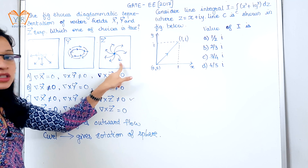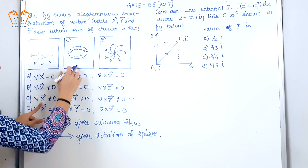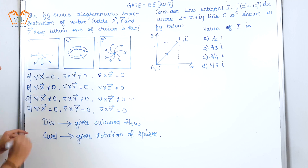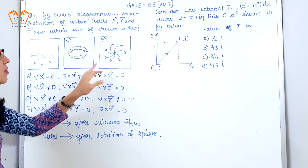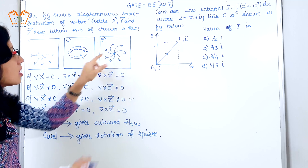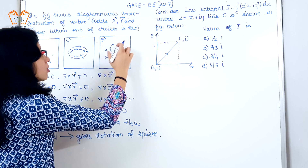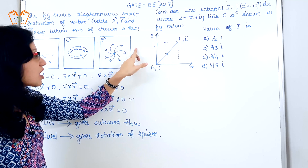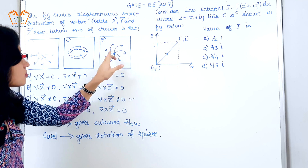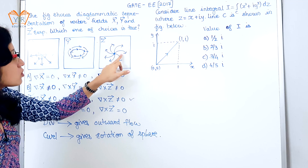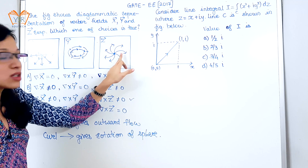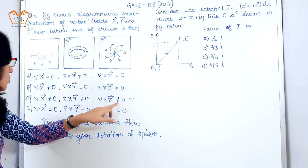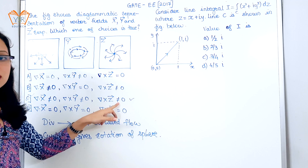Option C is valid. You don't have to go for the last figure. Based on the two figures, you can say that option C is the correct one. Still, we will understand the last figure also. The arrows are shown in the outward direction, so divergence is not equal to zero. And also it shows rotation, so curl is also not equal to zero. So option C is correct.